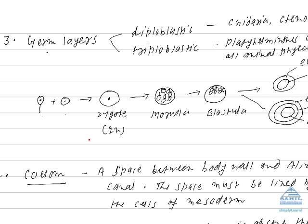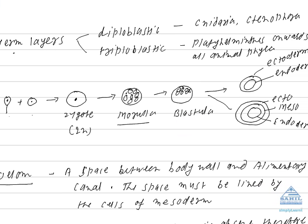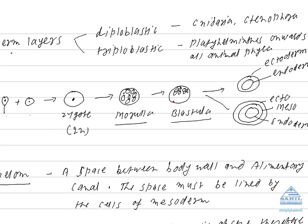Zygote undergoes successive divisions to form a solid ball-like structure called morula. Then in morula, a cavity develops inside. When this cavity develops inside morula, the structure is now called blastula. This cavity is called blastocoel.